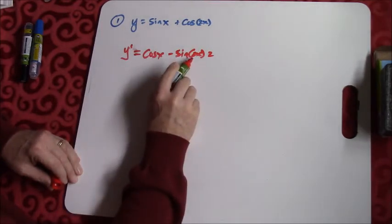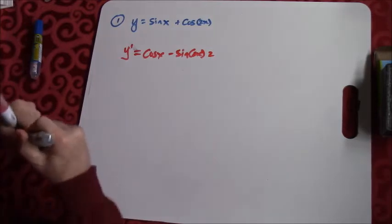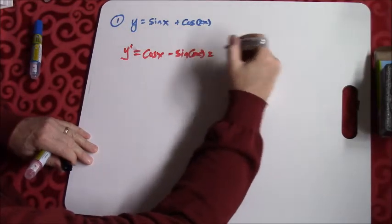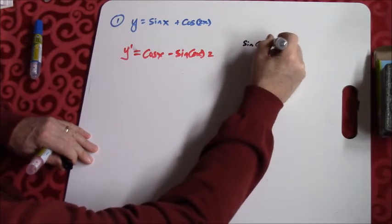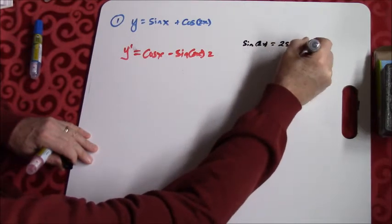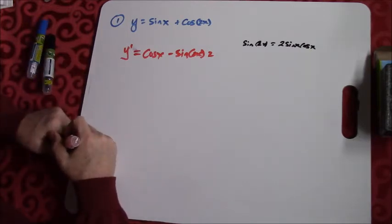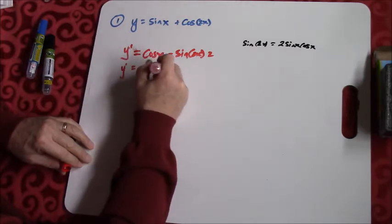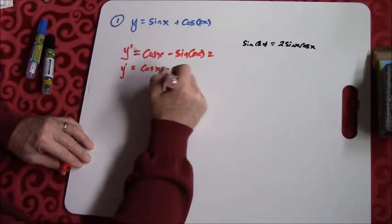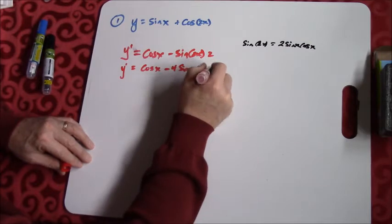Working with messy angles is not always the easiest thing. It's always good if we can remember some of those identities to be able to change that. This is a double angle formula — sine of 2x equals 2 sine of x cosine of x. So if I change that over, y prime equals cosine of x minus 2 times 2, that would be 4 sine of x cosine of x.